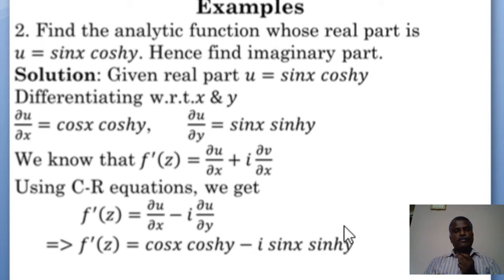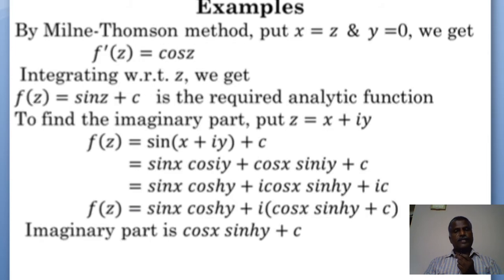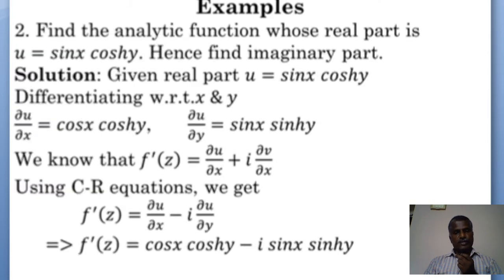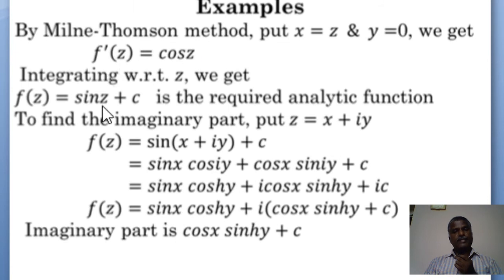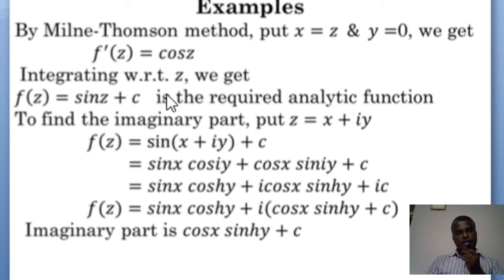By the Milne-Thomson method, put x = z and y = 0. We get f'(z) = cos z, since cosh 0 = 1 and sinh 0 = 0, making the second term vanish. Integrating, the integral of cos z is sin z. Therefore f(z) = sin z + c, which is the required analytic function.